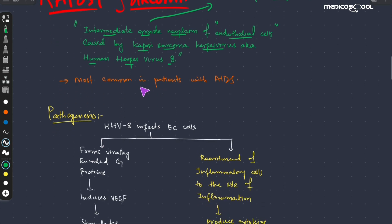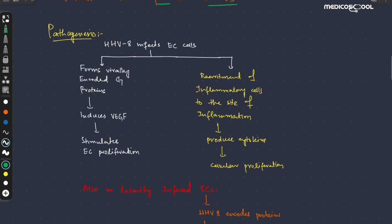It is the most common sarcoma or neoplasm in the patient with AIDS. Now, coming towards its pathogenesis — how does human herpesvirus 8, or the Kaposi sarcoma herpesvirus, cause this neoplasm?